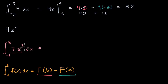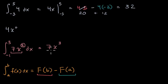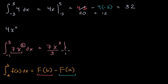Using the reverse power rule, we increase the exponent by one, so we're going to have seven times x to the third. And then we divide by that increased exponent — seven x to the third divided by three. We want to evaluate that at our upper bound and then subtract it evaluated at our lower bound.